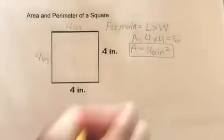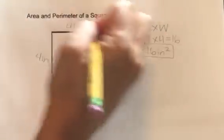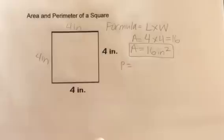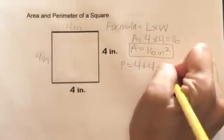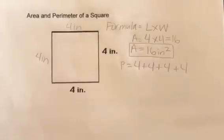Alright, for the perimeter, we need to add all the sides. Since there's 4 sides, we need to add all 4. We're going to do 4 plus 4 plus 4 plus 4.